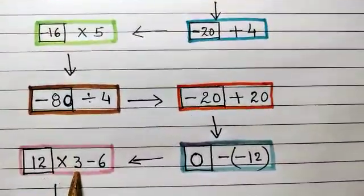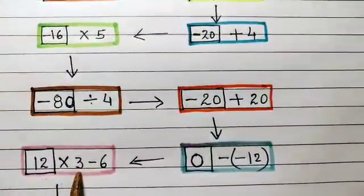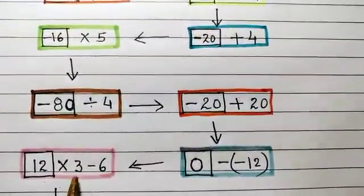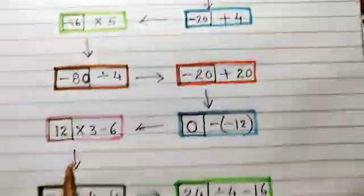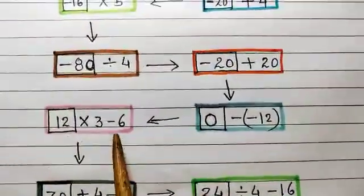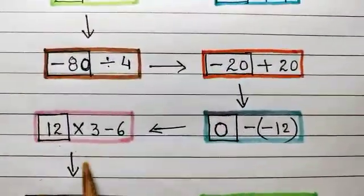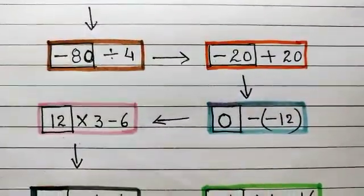This positive 12, when multiplied by 3, gives you 36. Then 36 minus 6, that means it is 30. So the result is 30.